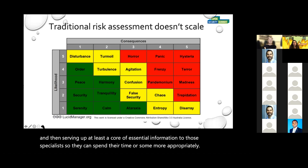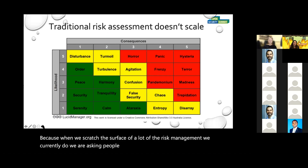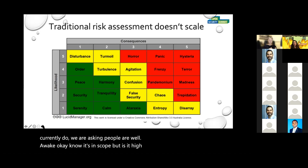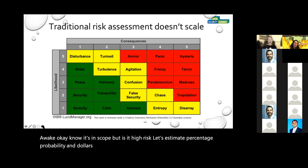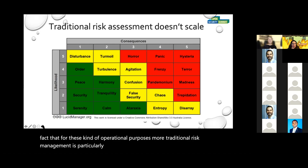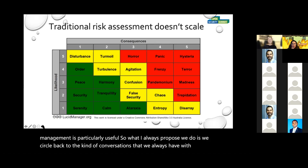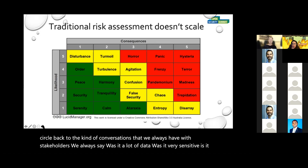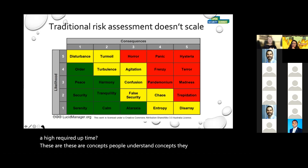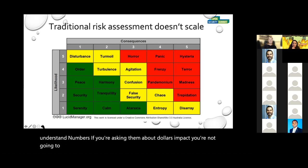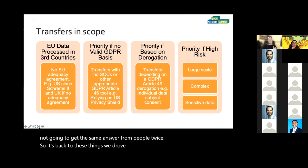When we scratch the surface of a lot of risk management, we're asking people to estimate percentage probability and dollar impact. On what basis? I don't ascribe to the fact that for these operational purposes, more traditional risk management is particularly useful. What I always propose is that we circle back to the kind of conversations we always have with stakeholders: was it a lot of data? Was it very sensitive? Is it high required uptime? These are concepts — people understand concepts. They don't understand numbers. If you're asking about dollar impact, you're not going to get the same answer from people twice. So it's back to these risk indicators, and these are things we can add a knowable standard answer to.